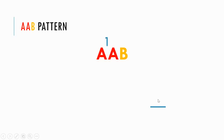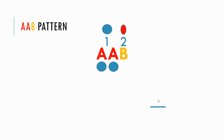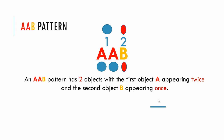So here we have an AAB pattern. Our AAB pattern has one object for A and another object for B, so we have two objects. Let's say the first object is a circle and the second object is an oval. Our pattern will therefore be: circle, circle, oval — AAB. An AAB pattern has two objects, with the first object A appearing twice and the second object B appearing once.